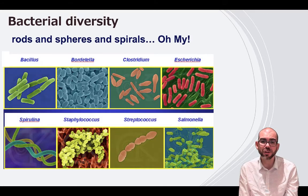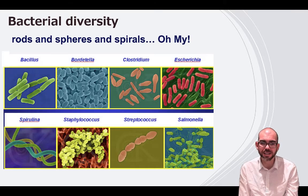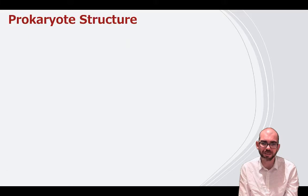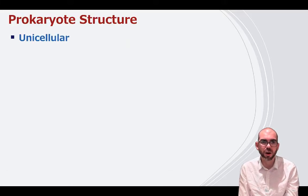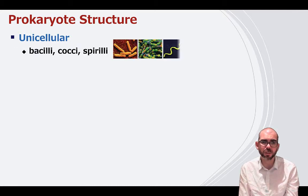Bacteria have tremendous diversity in their structure. You can see some are pill shapes, circle shapes, spiral shapes — whatever shape there is, bacteria have probably evolved to have it. Prokaryotic cells are unicellular and the three most common shapes are bacilli, cocci, and spirilli.